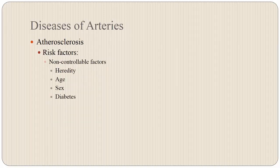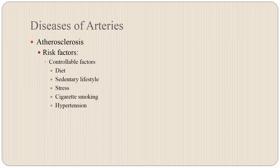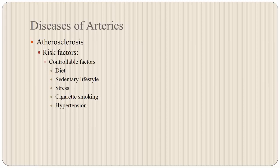There are two major categories of atherosclerosis risk factors: non-controllable and controllable. Non-controllable factors include heredity, age, sex, and history of diabetes, although diabetes may be modified to reduce risk. Controllable factors include diet, exercise, stress reduction, cigarette smoking cessation, and hypertension management. You should spend time with your patient emphasizing the importance of modifying controllable factors before an adverse event occurs rather than after.